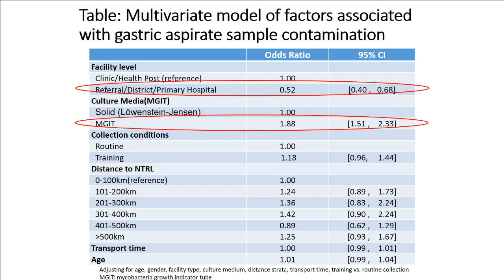The second significant factor associated with contamination was the culture media used. Historically, solid media Lowenstein-Jensen had been used. About halfway through the study period, the lab changed to liquid culture media — MGIT — and with that we actually saw an 88% increase in contamination. So two factors: smaller health facility and change to liquid media.